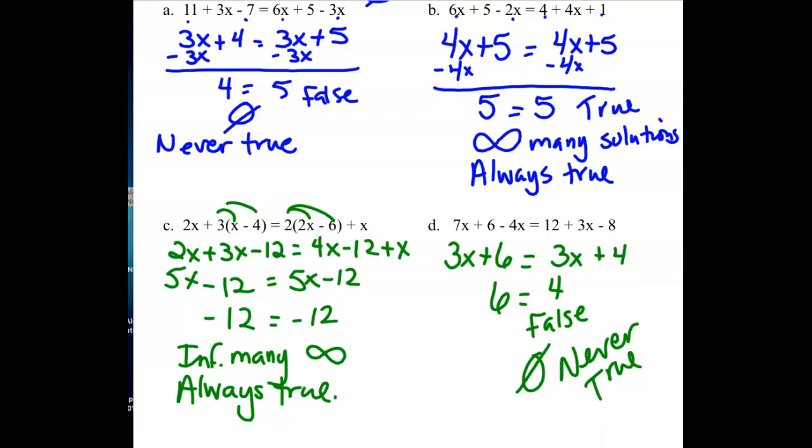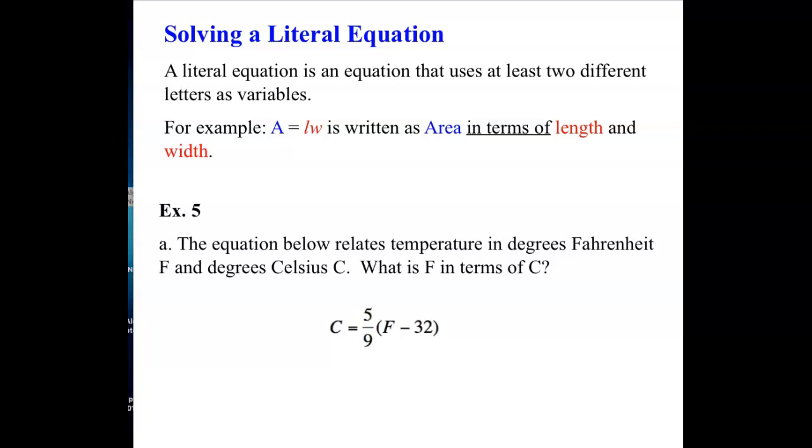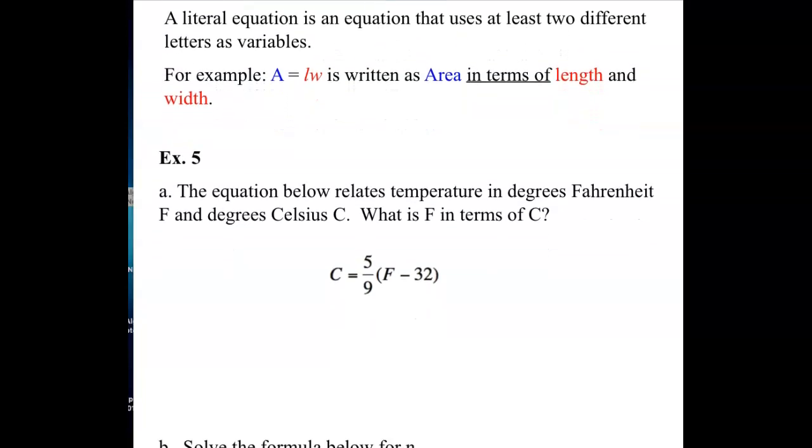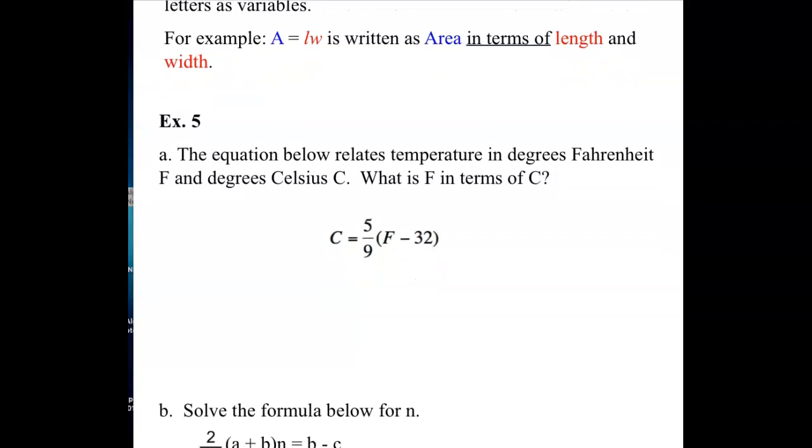The last piece that we need to look at here for section 1.4 is solving literal equations. A literal equation is an equation that uses at least two different letters as variables. An example would be something like A equals LW. That's our formula for the area of a rectangle. Area equals length times width. In this case, we would say area is given in terms of length and width. So when they say put it in terms of, whatever you're putting in terms of, that's what you're solving for. Another way we could say that is solve for area.